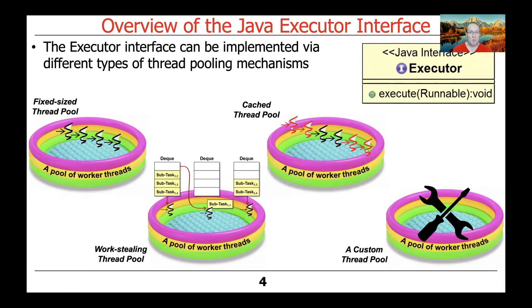There are a bunch of different ways you can implement this interface. You can use a fixed-size thread pool, a cached thread pool, a work-stealing pool, or you can make your own custom thread pool. It's really up to you how much effort you want to go into and what the benefits are for your particular program.